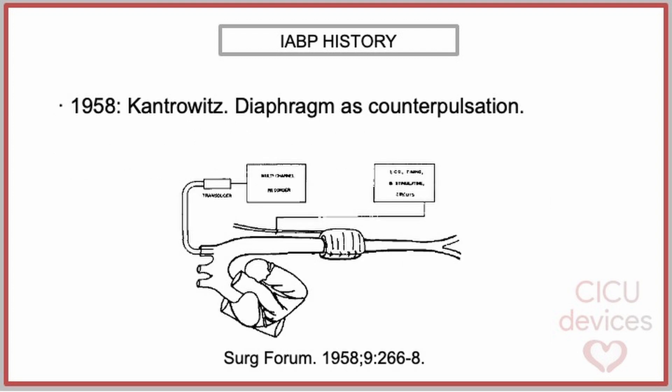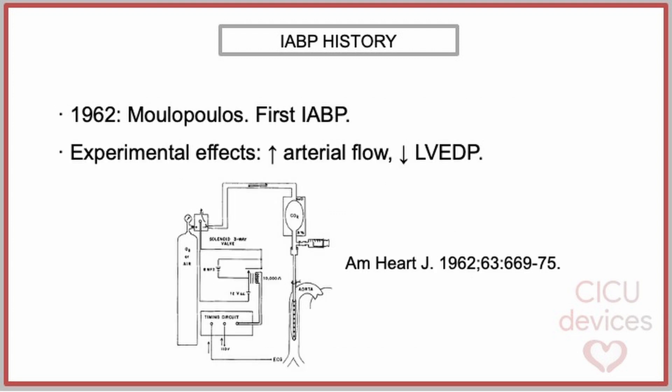In the same year, Cantrewitt published his findings with the experimental use of diaphragm contraction as a kind of external aortic counterpulsation. In 1962, Moulopoulos introduced the first intra-aortic balloon pump — an early system that used carbon dioxide to inflate a polyvinyl balloon surgically inserted into the aorta of experimental dogs. These experiments demonstrated increased arterial blood flow and reduced left ventricular end-diastolic pressure.